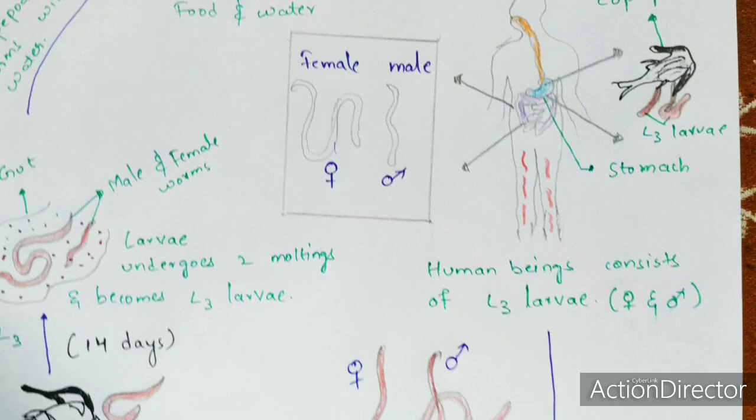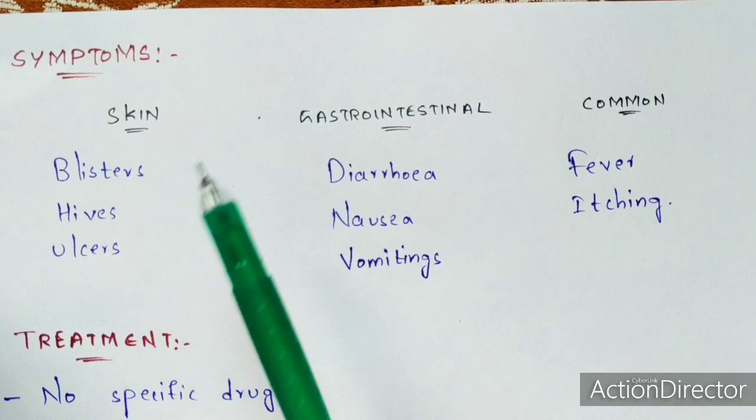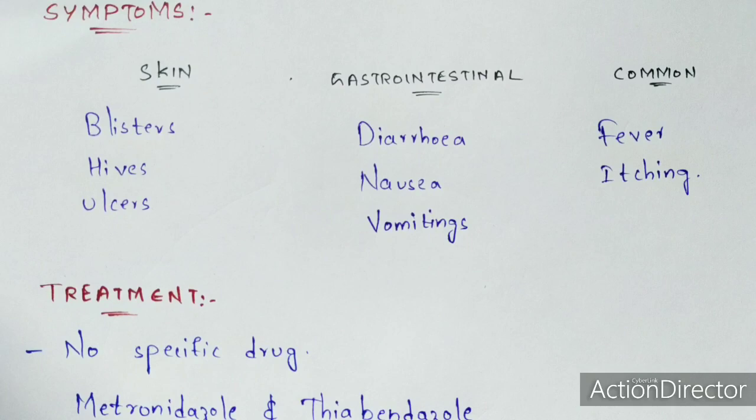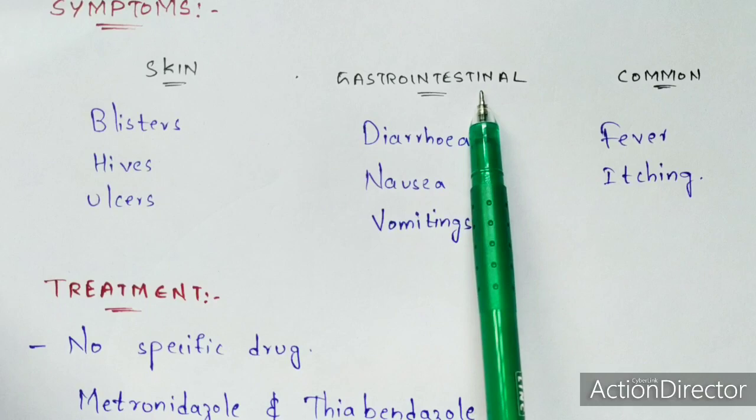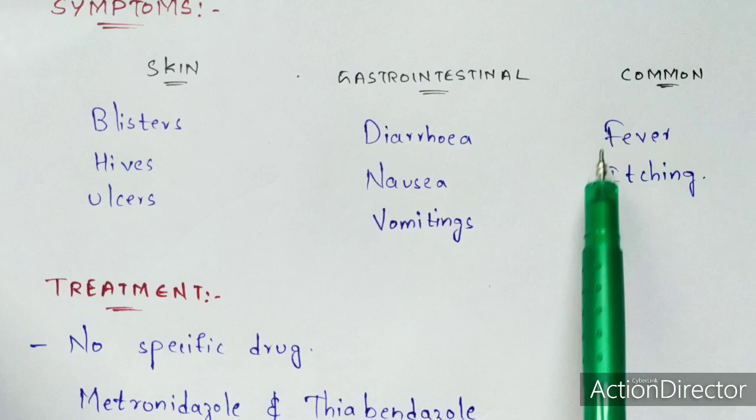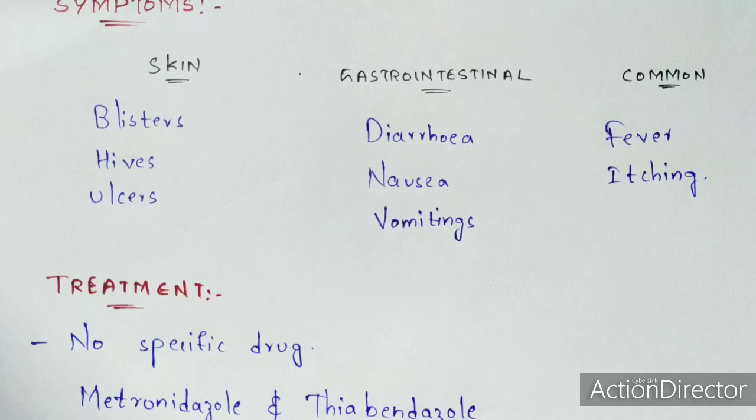Now let us learn about symptoms and treatment. Skin symptoms include blisters, hives, and ulcers — blisters being where the L1 larvae protrude. Gastrointestinal symptoms include diarrhea, nausea, and vomiting. Common symptoms include fever and itching. Itching is very common because when the larvae protrude, it causes severe pain that is very difficult to bear.